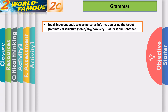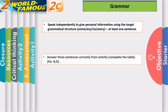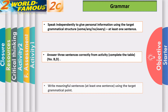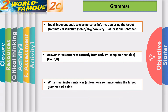The objectives of the grammar lesson are: speak independently to give personal information using the target grammatical structure, which are some, any, no, and every; answer three sentences correctly; and write meaningful sentences using the target grammatical point.